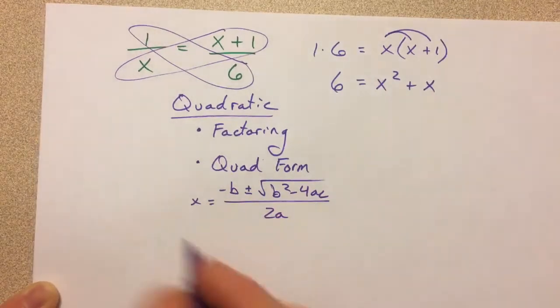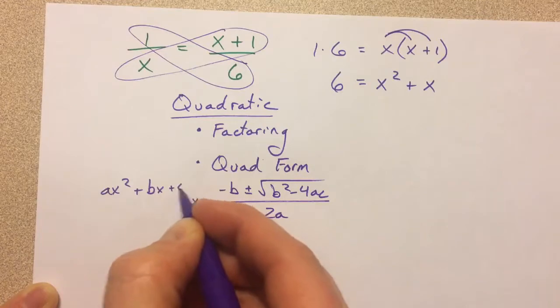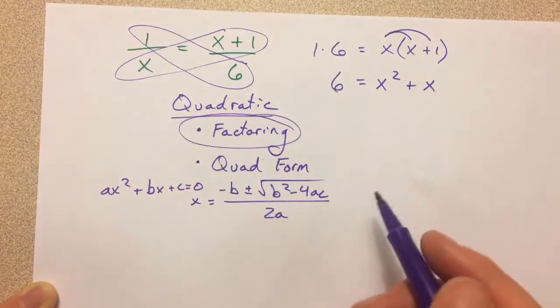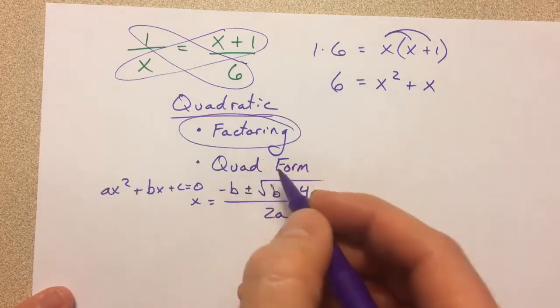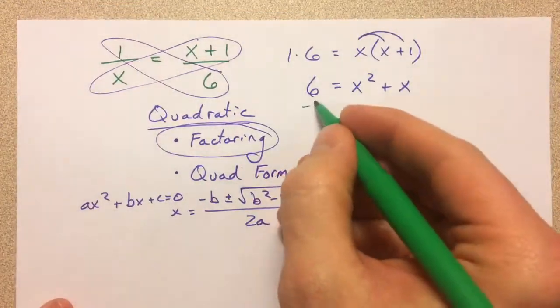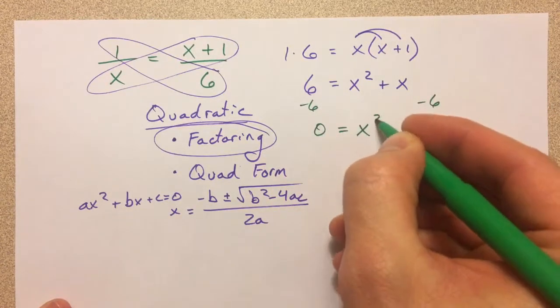And that's x equals that if ax squared plus bx plus c equals 0. Now we're going to focus on factoring, and when you factor or when you solve with quadratic formula, the idea is set your equation equal to 0. So we're going to subtract our 6 over.